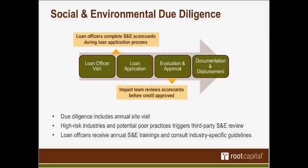For the few cases — under 5% — when the social and environmental due diligence surfaces risks, whether with high-risk industries or something that comes up during the site visit, we have a protocol in place and a separate pool of grant funding, which we use to engage a third party to conduct additional review before the loan moves forward. How do loan officers as finance professionals know what to look for in terms of social and environmental risk? Three pieces: many of our loan officers have previous experience in agriculture; we conduct annual social and environmental due diligence trainings in each region; and we've developed industry-specific guides that loan officers consult as resources.